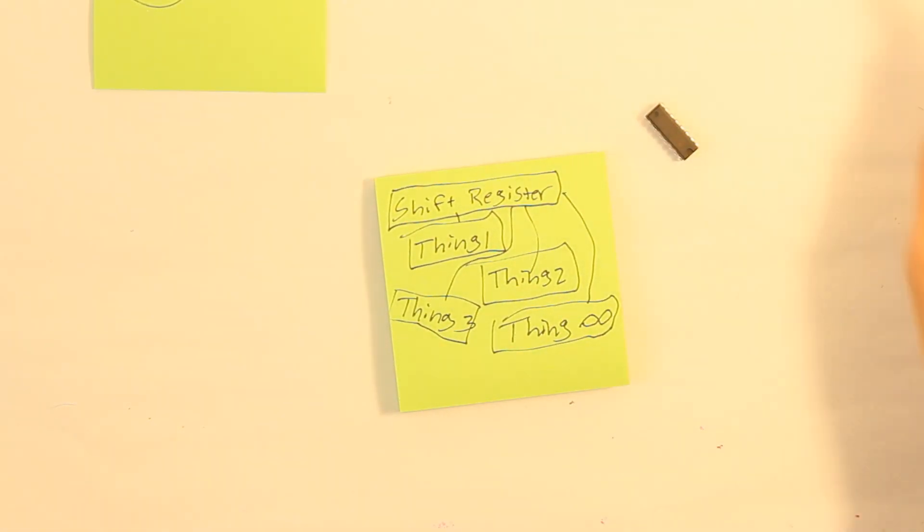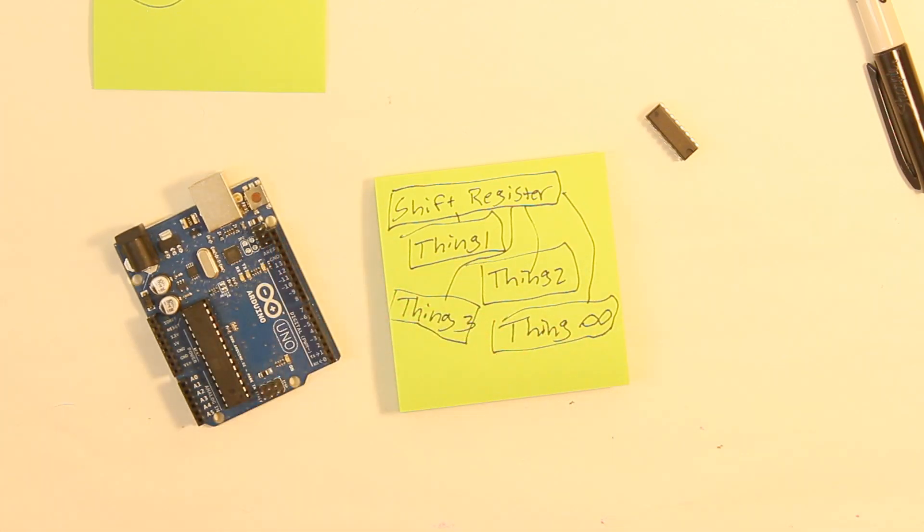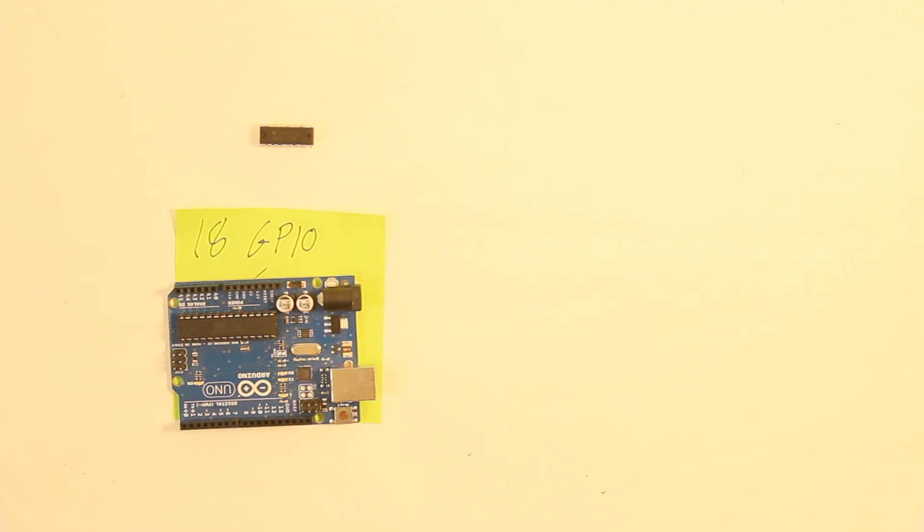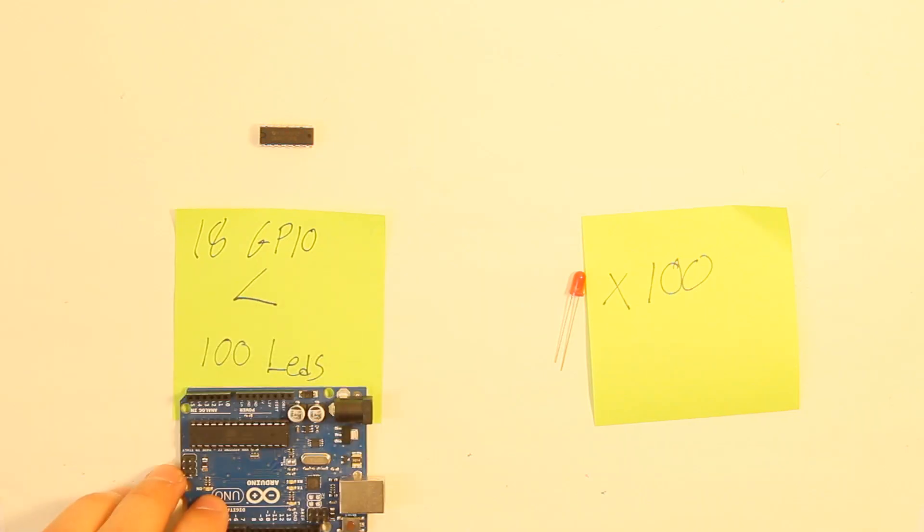Say you have a microcontroller, like an Arduino, which just like any other microcontroller that has ever existed, has a limited number of GPIO ports. You also have a hundred LEDs that you need to control. What do you do?